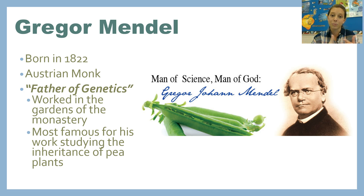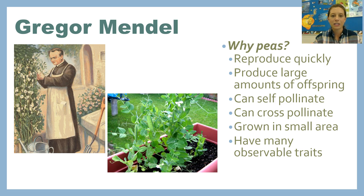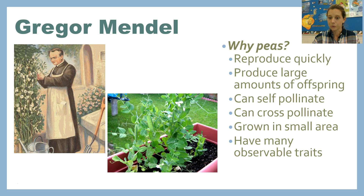He found a way to really merge his two passions, which were science and religion, and he worked in the gardens of the monastery. He's most famous for his work studying the inheritance of pea plants, and it was through that work that he became what we now consider the father of genetics. Why are peas so good for studying inheritance? They reproduce really quickly, produce a large amount of offspring, can self-pollinate or cross-pollinate, can be grown in a very small space, and have many observable traits.